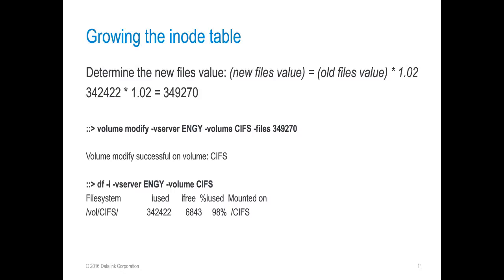We can use this value with the volume modify command, specifying our vserver and volume, and using the -files flag. You'll see a note that the volume modify was successful. If you do receive an error running this command, it's possible that you have reached the maximum amount of inodes for a given volume, which would be more than one per 4 KB. ONTAP will not let you raise it past this point. If you see this case, you can revert to a volume grow method to increase the inode table. At that point, it might be worth considering restructuring data or looking to place the data on a new volume.